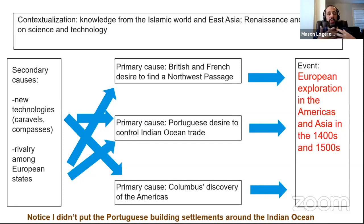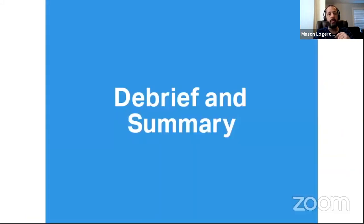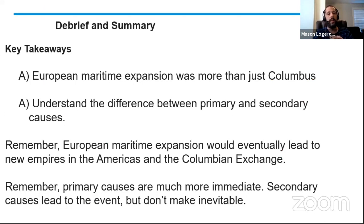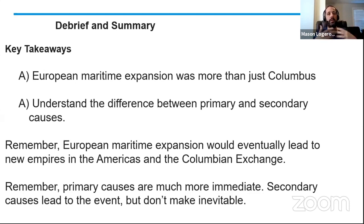A quick note: I didn't put the Portuguese building settlements around the Indian Ocean as a cause because that is part of the exploration and settlement itself — it's the definition of the thing itself. To summarize today: European maritime expansion is not just Columbus — there's a lot more to it. Make sure you understand the difference between primary causes, which are more immediate, and secondary causes, which are more indirect. All of this maritime expansion is going to lead to new empires in the Americas and eventually in Asia, and to the Columbian Exchange, which we'll cover in the next few days.